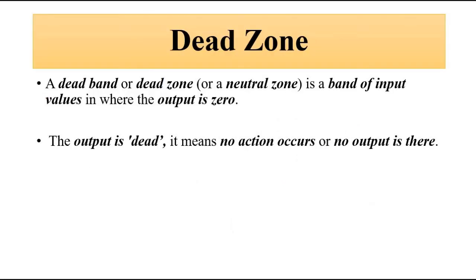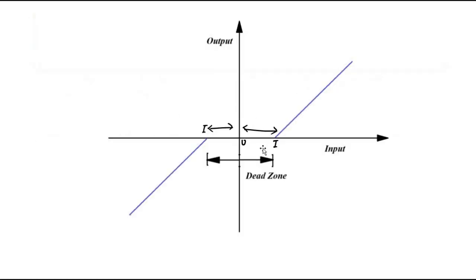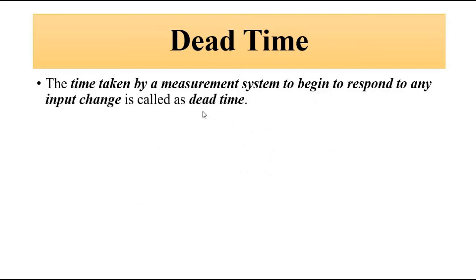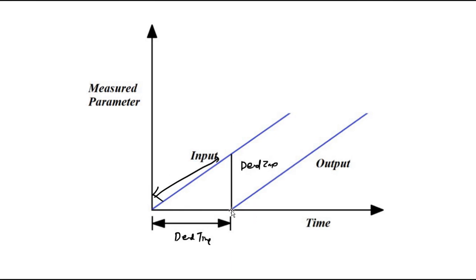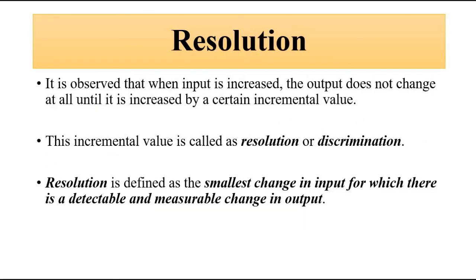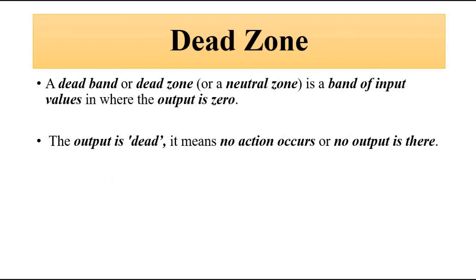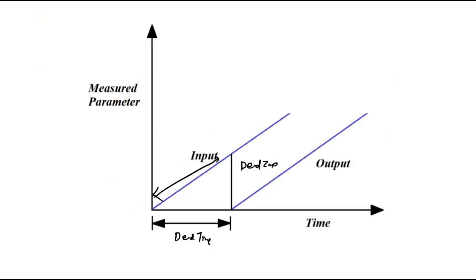To summarize: dead zone is the set of input values where the output is zero — no output, output is dead. Dead time is the time taken by the measurement system to respond to the input change beyond the dead zone, where we get some non-zero output. Both concepts are related to threshold and resolution. I hope you liked this video — please subscribe to Engineering Tutorial for more videos related to engineering, science, and technology. Have a great day, thank you.